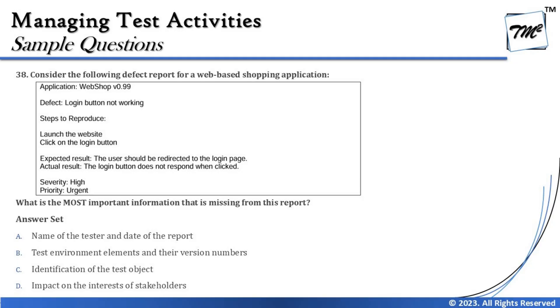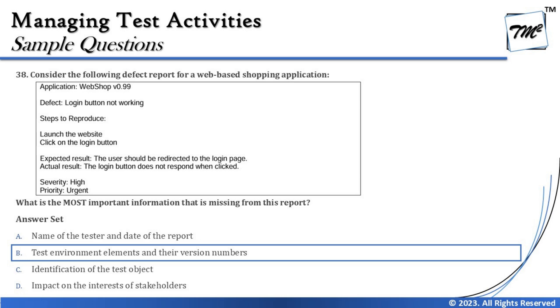You can still reach the tester otherwise, but to reproduce a defect you need the environment details. Option C — identification of the test object — is already in the report; we are talking about the login button. Option D — impact on stakeholder interests, which is severity — is also defined in the report. So the real choice was between A and B, not C and D. The right answer is B — environment elements and version number are missing and are important to include in this defect report. With that, we complete Chapter 5 of Set C.